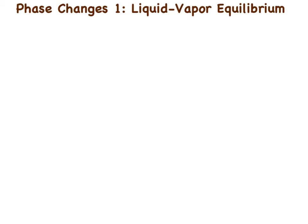To start off this series, we're going to be talking about the liquid-vapor equilibrium — meaning we have a cup, throw some water in there. We're talking about the equilibrium between the liquid water and when it would go into the gas phase and vice versa. A liquid going into the gas phase is evaporation or vaporization, and the gas phase going to a liquid is condensation.